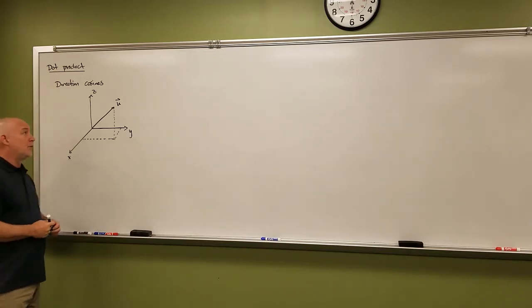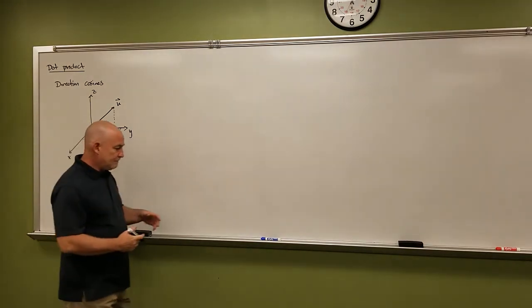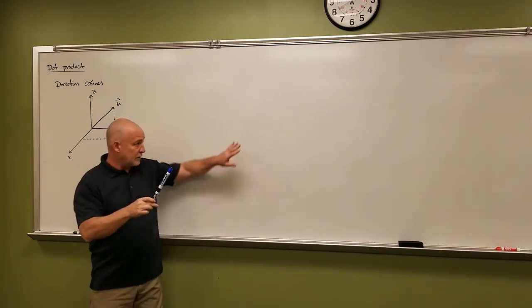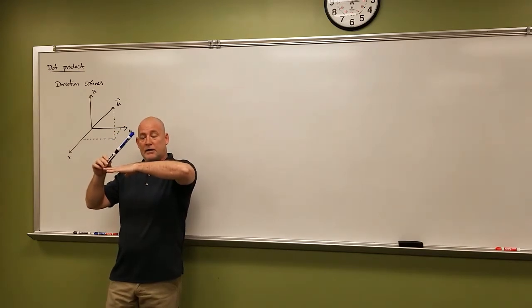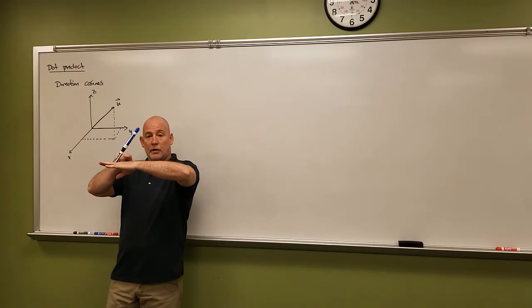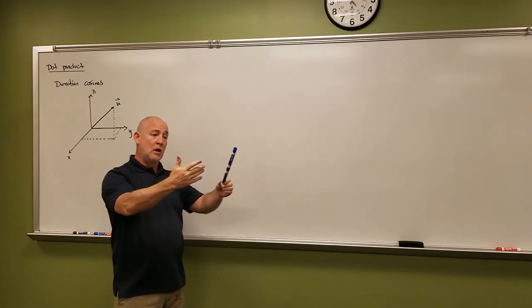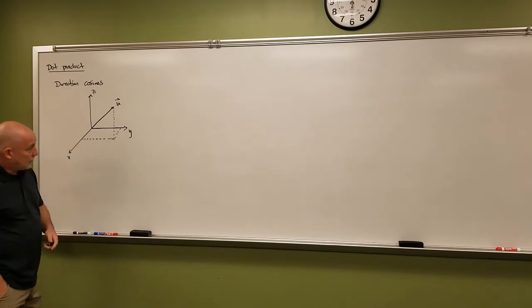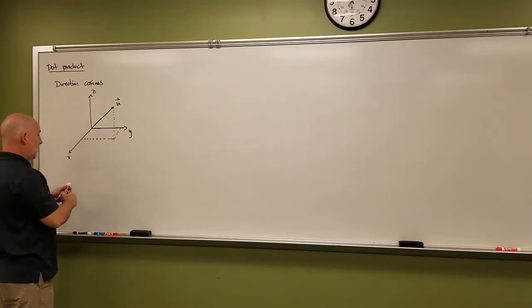Continuing along with our dot product, the next thing I want to talk about are the direction cosines. When we're talking about a two-dimensional vector, we had our vector out here in two dimensions. We said that its direction was based off the angle it created with the positive x-axis. What if this is actually a three-dimensional vector out here in space? How do we give its direction? The way that we give its direction are called the direction cosines, and are based off the angle the vector would make if drawn in standard position from the origin — the angle it makes with all three of the axes.